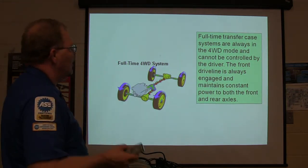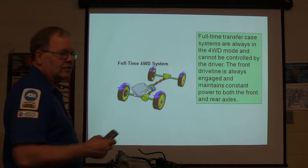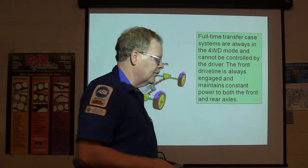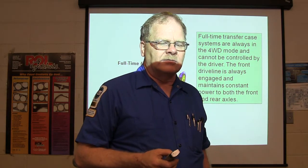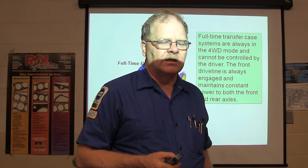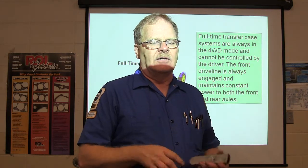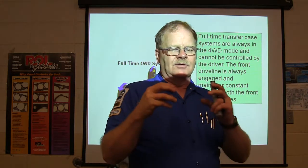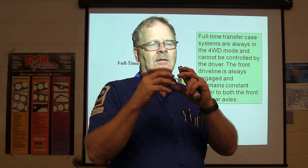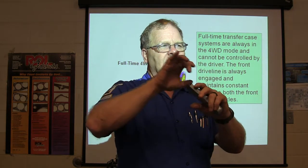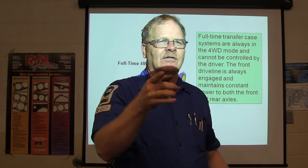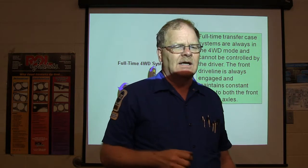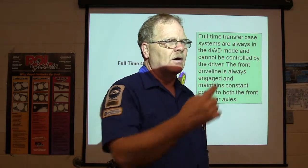Full-time transfer case systems are always in four-wheel drive mode and cannot be controlled by the driver. The front driveline is always engaged with constant power to both front and rear axles. On some older Jeeps, they had a stub axle going out to the wheel and one coming out of the front differential, with splines on the two stub axles. They were only engaged when a collar slid over those splines and locked the axles together — that's how your vacuum hub lock works.